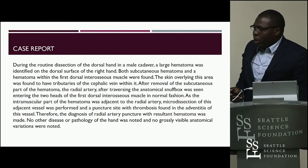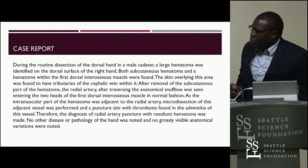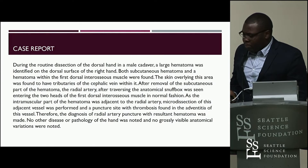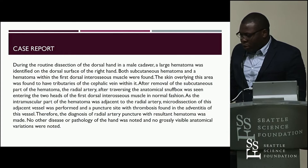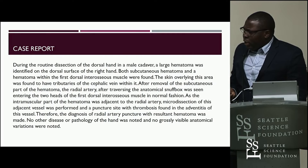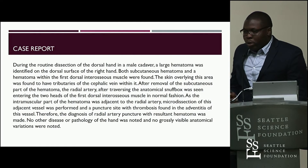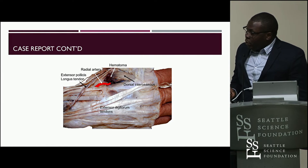That's why I want to talk about this — if you go blindly without palpating for the radial artery thinking it's just a vein, there can be some complications. Briefly about our case report: during a routine dissection of a male cadaver on the dorsal surface of the right hand, we found a subcutaneous hematoma in the radial artery. Looking at the skin overlying this area, there were normal tributaries of the cephalic vein, so this specimen didn't have any anatomical variation — it was normal anatomy. But still, there was a puncture site in the radial artery and we found hematoma and thrombosis of the radial artery. This is a picture from our case report — you can see the radial artery, the dorsal interosseous muscle, and the hematoma that was found.